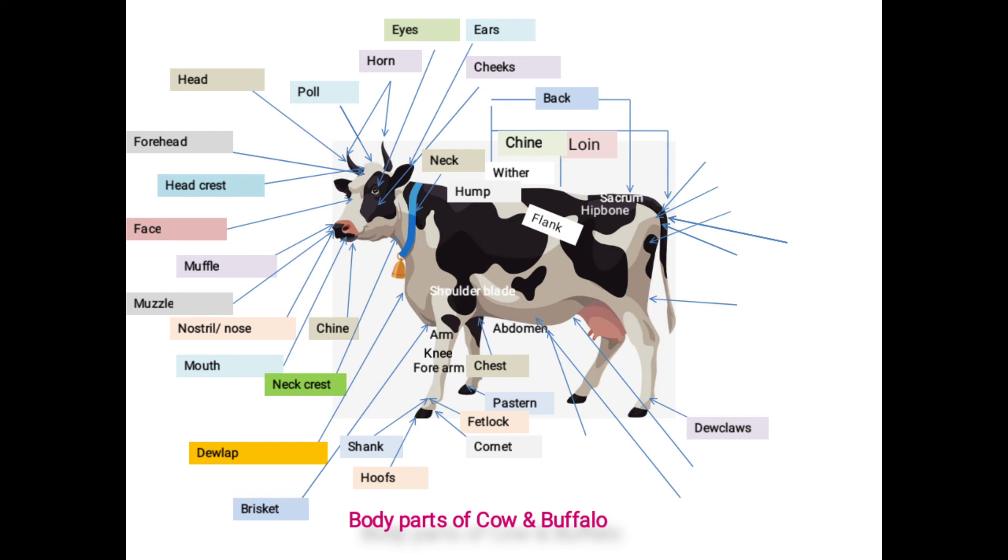It includes sub parts, that is sacrum: it is a portion extending from loin to the tail root. Second one is rump: it is a sloppy portion located below the sacrum. Then pin bone: the two projections on each side of the anus called as pin bone.